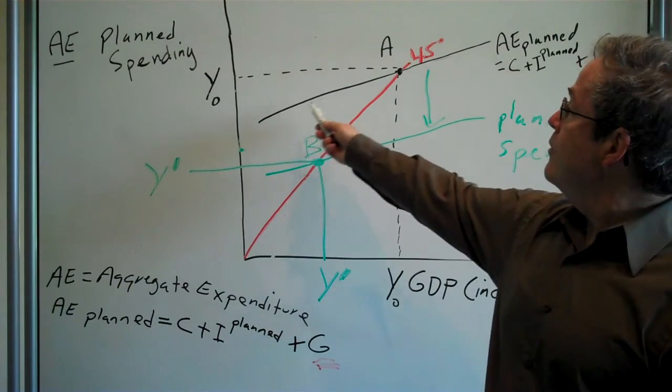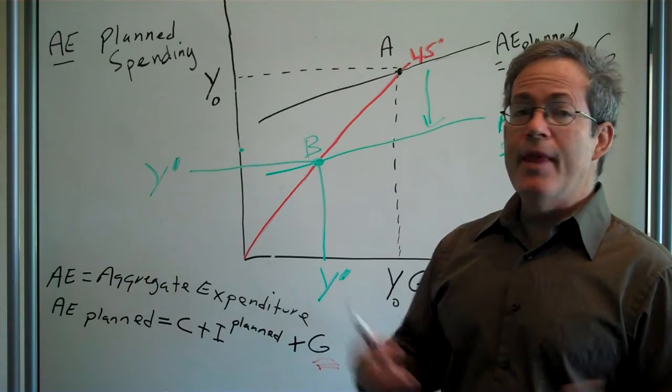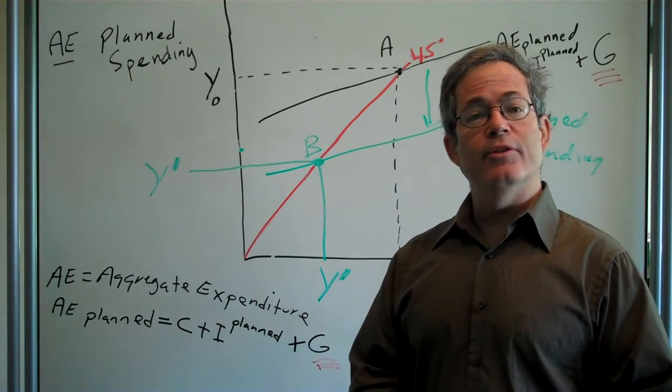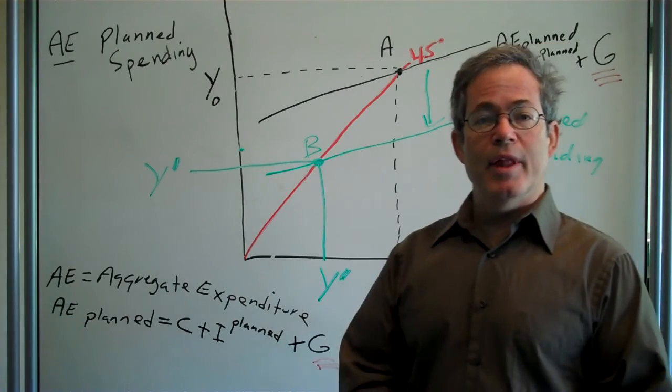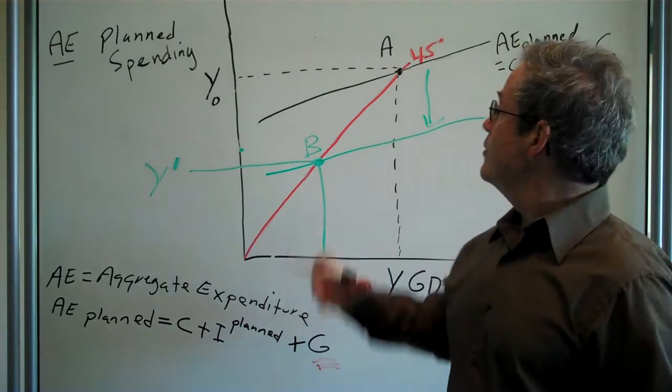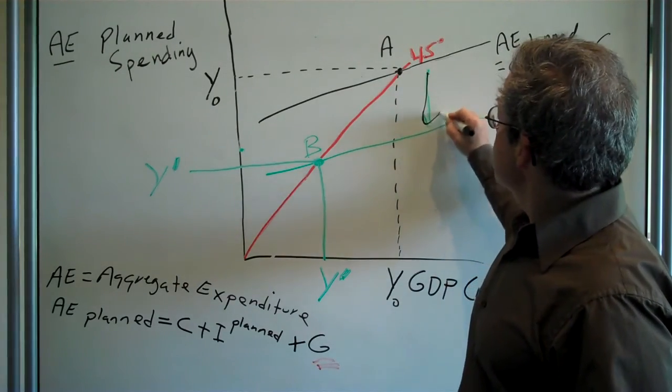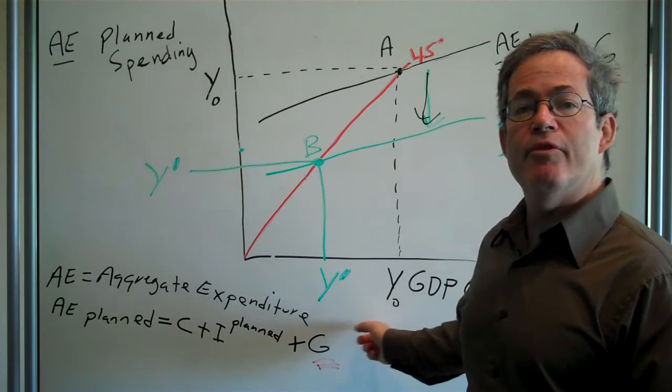Let's say the economy starts off at a high level of planned expenditure. Then, because of some financial crisis or some other big event, there's a big decline in planned expenditure from the black line all the way down to the green line. When that happens, through the multiplier process, income falls.